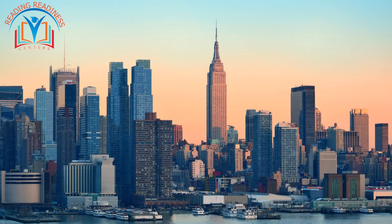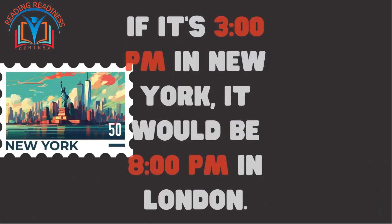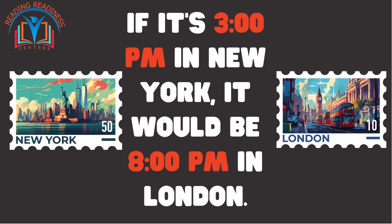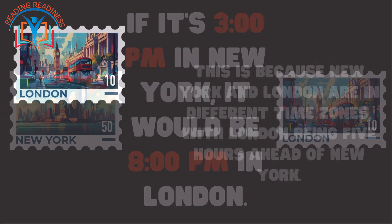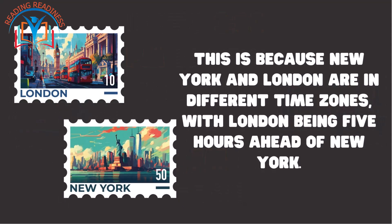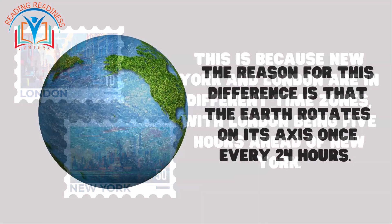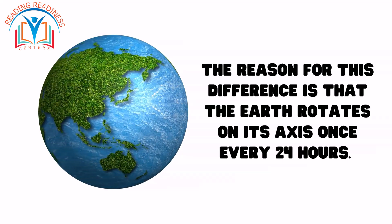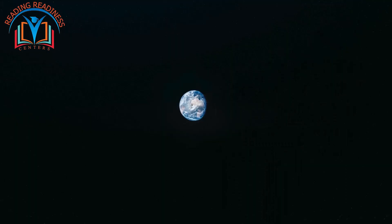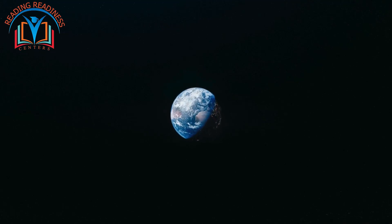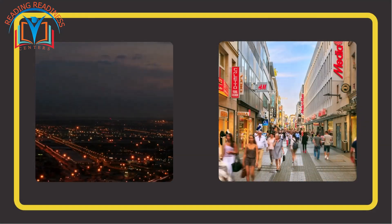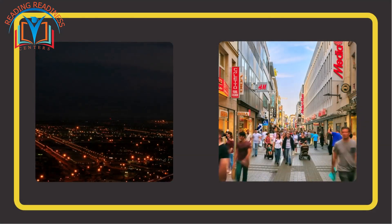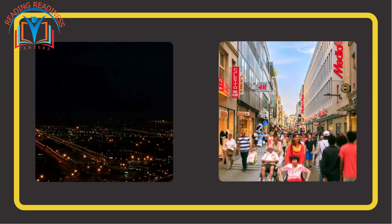Imagine you're in New York and your friend is in London. If it's 3 PM in New York, it would be 8 PM in London. This is because New York and London are in different time zones, with London being five hours ahead of New York. The reason for this difference is that the earth rotates on its axis once every 24 hours. As the earth rotates, different parts of the planet experience daylight and nighttime at different times. To keep track of these changes, we've divided the world into 24 time zones, each representing a one hour difference.